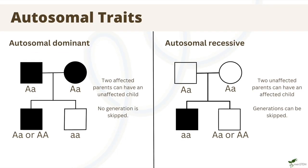Here is a nice summary of how to tell the difference between dominant and recessive traits using pedigrees. If there is an unaffected child with two affected parents, then the trait is dominant. If there is an affected child with two unaffected parents, then the trait is recessive. In both cases, this is only possible when the parents are heterozygous. Another difference is that dominant traits cannot skip a generation, whereas recessive traits can.